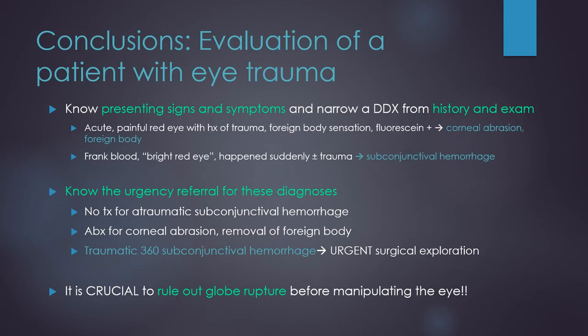In this video, we reviewed several common manifestations of eye trauma. An acute painful red eye, foreign body sensation, and positive fluorescein exam is concerning for a corneal abrasion or corneal foreign body. Frank blood and a bright red eye that happens suddenly is likely a subconjunctival hemorrhage. Atraumatic subconjunctival hemorrhages are not urgent and are likely to resolve on their own, whereas a foreign body requires urgent removal. A traumatic 360-degree subconjunctival hemorrhage will likely require emergent surgical exploration. If you take away only one point, remember that it is crucial to rule out globe rupture before ever manipulating the eye. Thank you very much for listening!